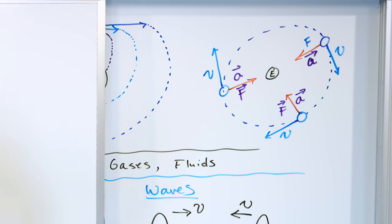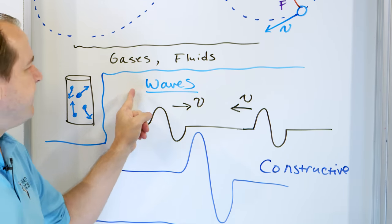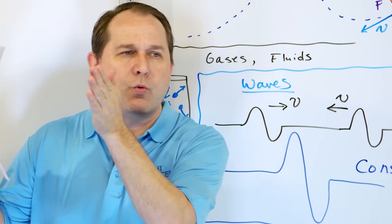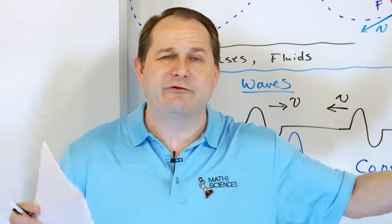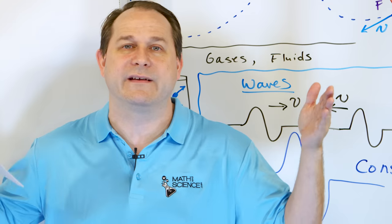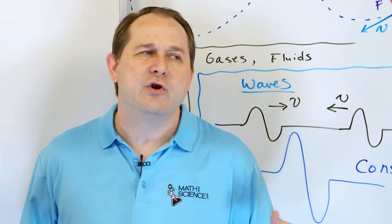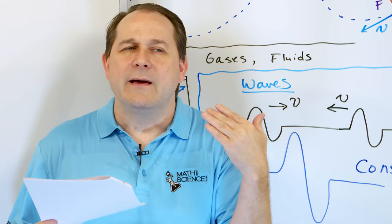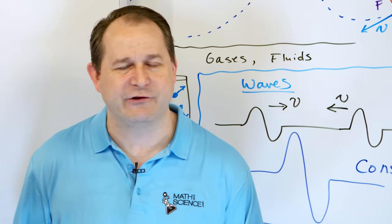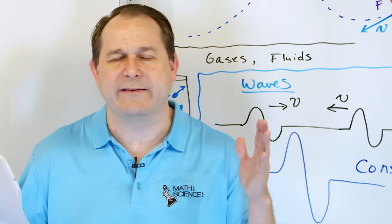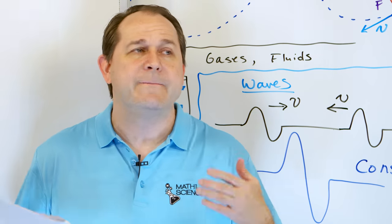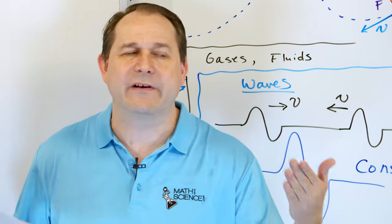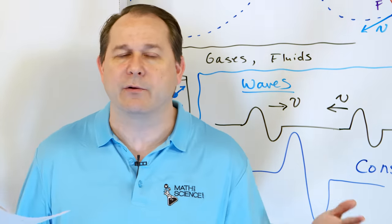We left off in the last lesson talking about waves. The roadmap for this lesson: we're going to talk about waves, then thermodynamics, and then electricity and magnetism and Maxwell's equations - which in my opinion are the most beautiful sets of equations we have. They describe how electricity and magnetism work and how waves of light come about from that.